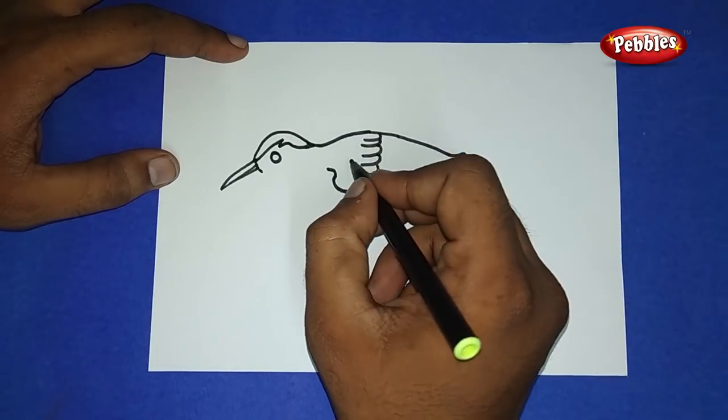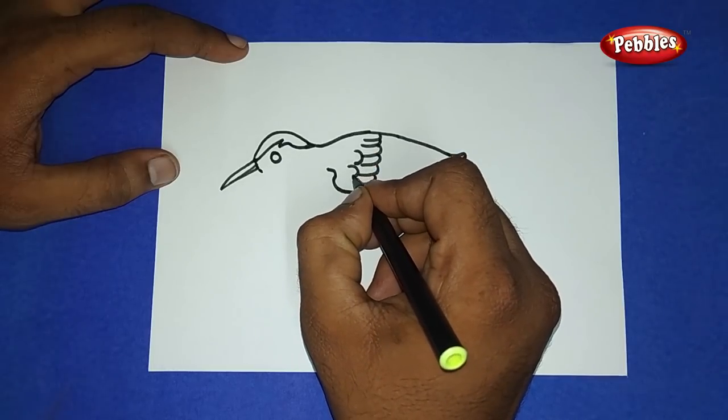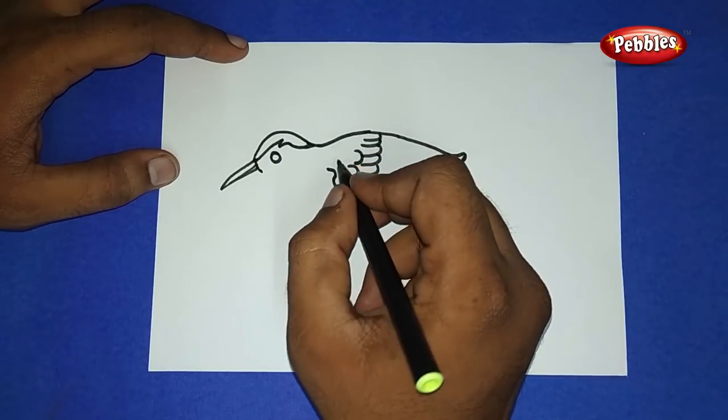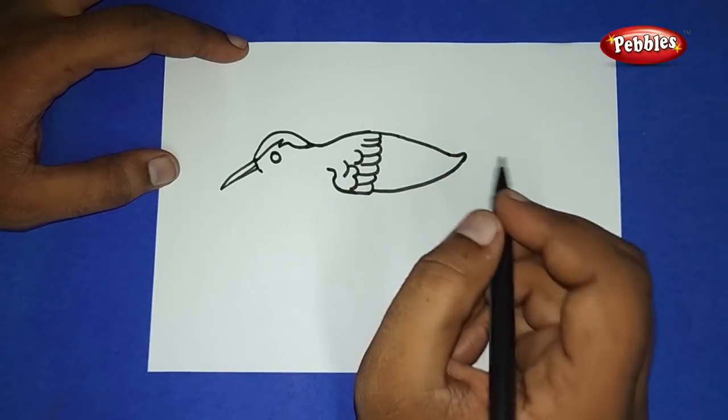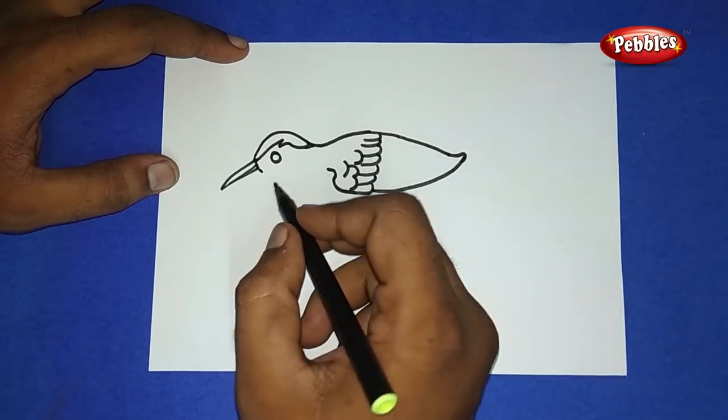At this side, draw small arcs like this. Coming to the bottom part at the tip of the nose...